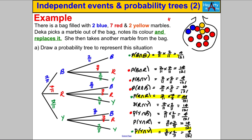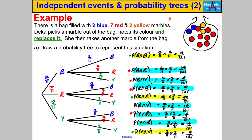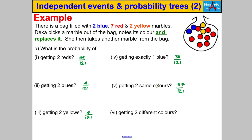For the last one — the probability of two different colors — you could add them all up, but an easier way is to realize the two colors are either the same or different; they're mutually exclusive and add up to one. Since we already know the probability of two same colors is 57 out of 121, the probability they're different is one minus 57/121, which gives us 64 out of 121. Let's try another question.